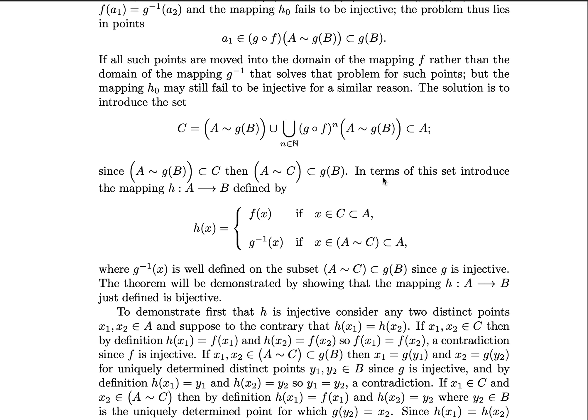This is because they will never get sent to a problematic area. These are always well defined under g inverse, so this is well defined. And then for any x in C, you simply let h(x) equal to f(x).